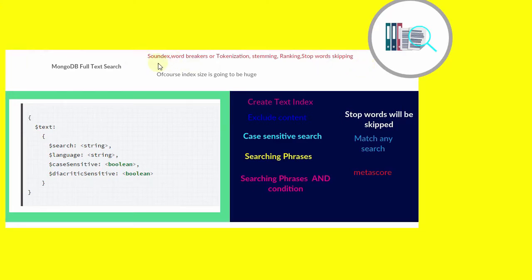Soundex is a feature currently not available in MongoDB — it is used for searching related words having similar phonetics. There are many advantages of full text search, especially for searching logs, blogs, and other website text content. There is a well-known disadvantage too: the index size is going to be huge, which is why many cloud service providers do not support full text search.